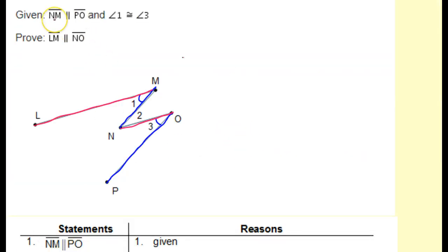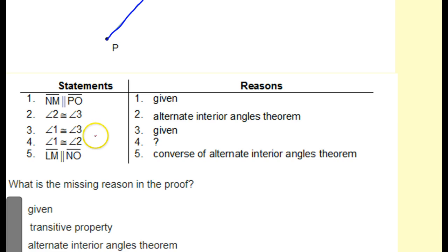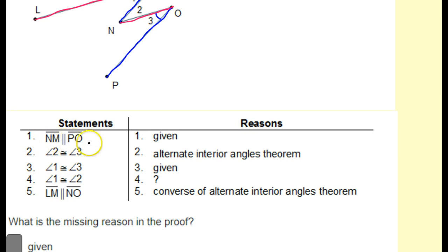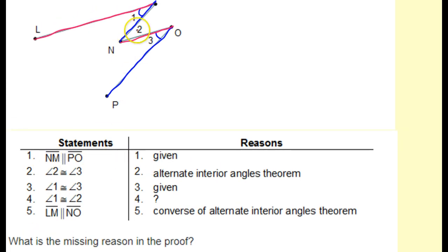In this problem we are given that segment NM, shown in blue, is parallel to PO, also in blue, and we're given that angle 1 is congruent to angle 3. We're supposed to prove that LM is parallel to NO — the red part. The two blue parallel lines are given; then angle 2 is congruent to angle 3 because those are alternate interior angles; and angle 1 is congruent to angle 3 was also given.